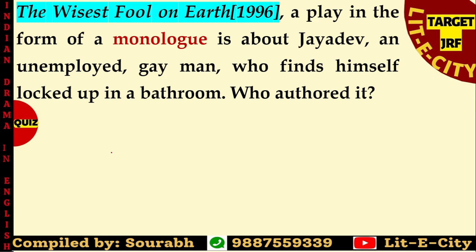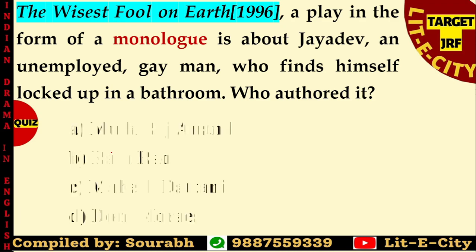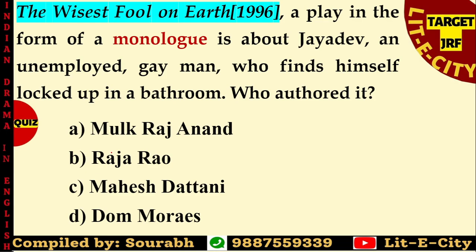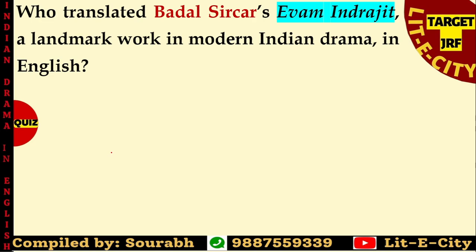The Wisest Fool on Earth, a play in the form of a monologue, is about Jayadev, an unemployed gay man who finds himself locked up in a bathroom. Who authored it? The options are: Mulk Raj Anand, Raja Rao, Mahesh Daktani, and Dom Moraes. The correct answer is Raja Rao — published in 1996, The Wisest Fool on Earth is authored by Raja Rao. Also notable: Badal Sarkar's landmark work Evam Indrajit in modern Indian drama in English — its works are continuously translated into various languages.